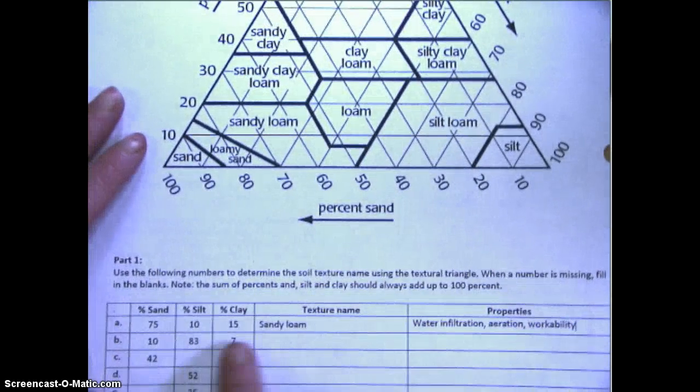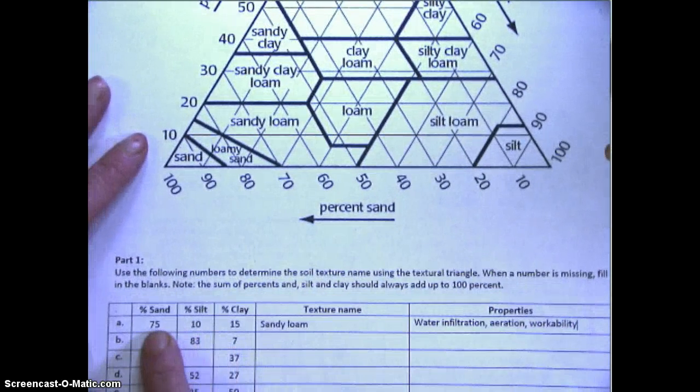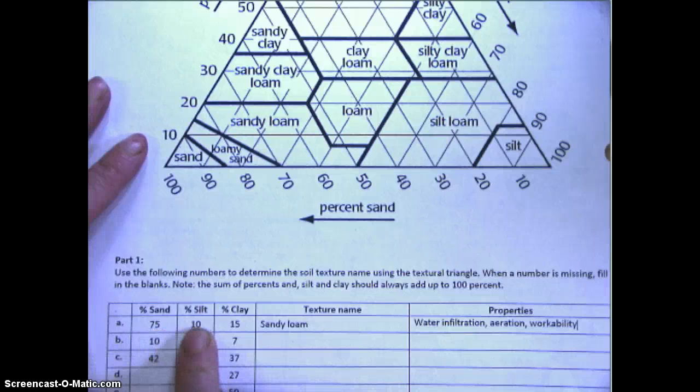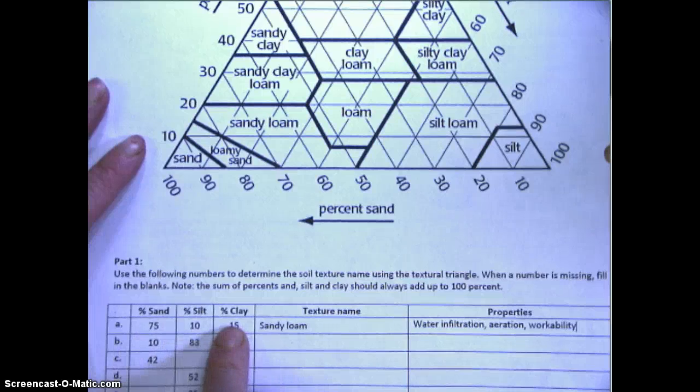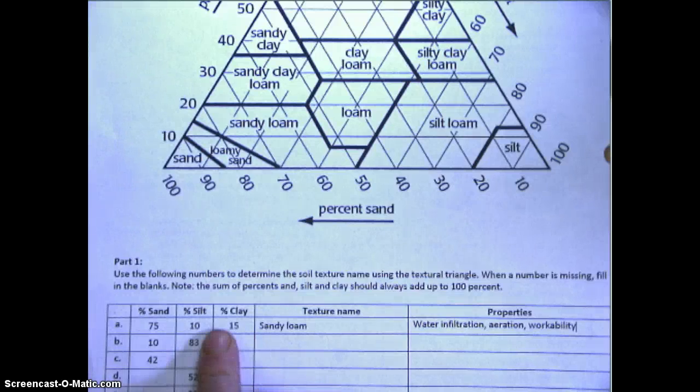For the first example we have 75% sand, 10% silt, and 15% clay. Remember if you add sand, silt, and clay makes loam, so it makes sense that that would be sandy loam.